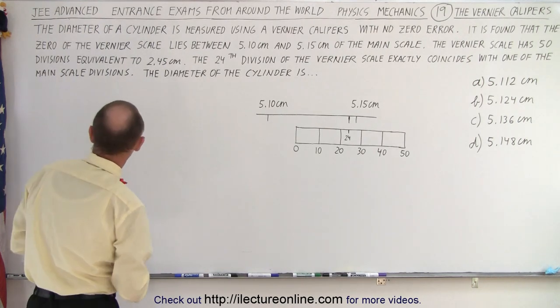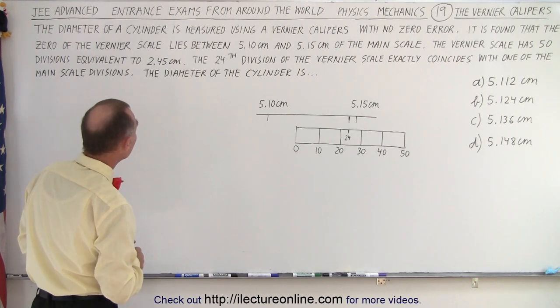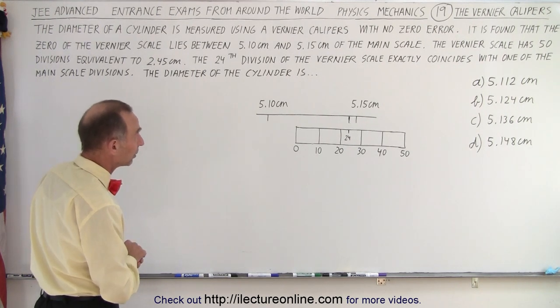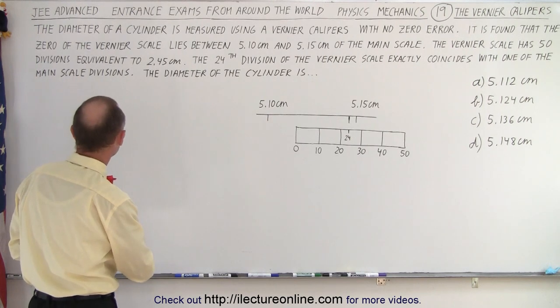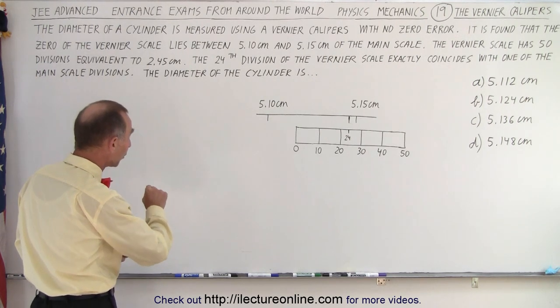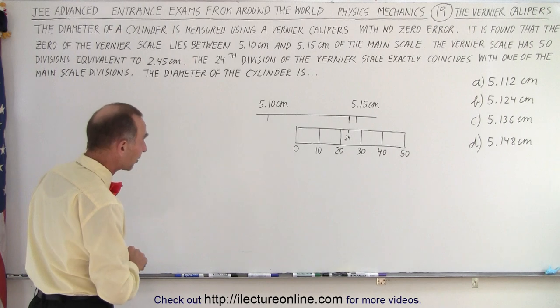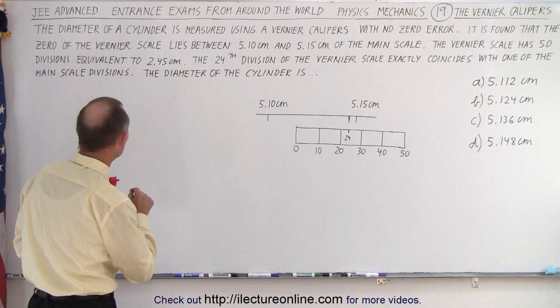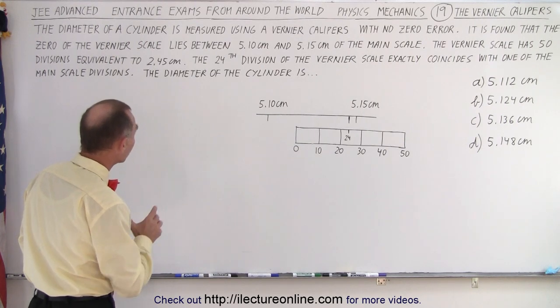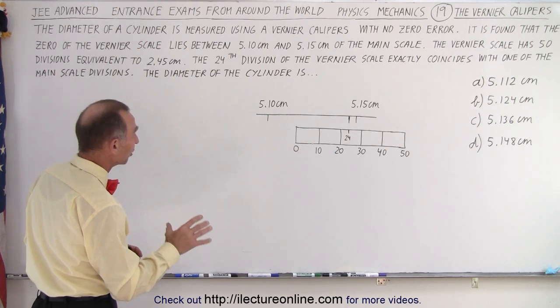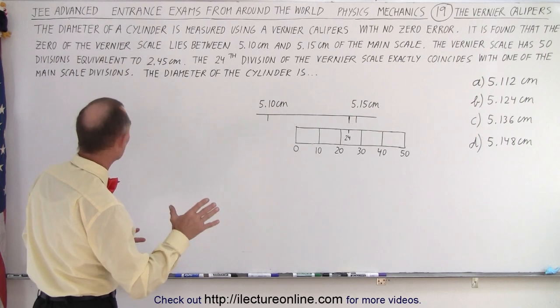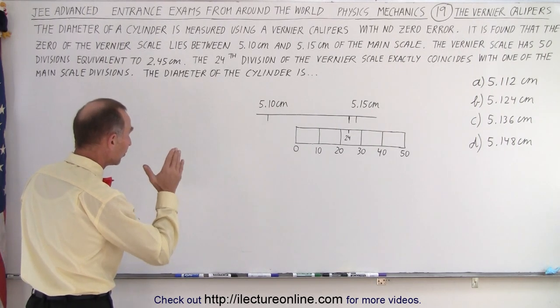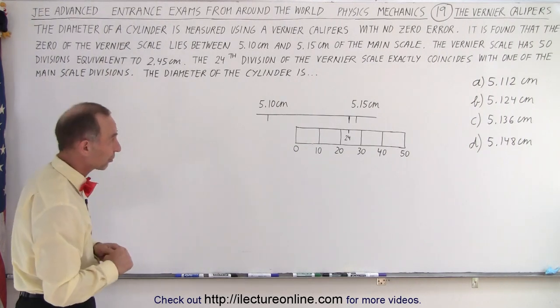Let's read the problem. The diameter of a cylinder is measured using a vernier calipers with no zero error. The zero of the vernier scale lies between 5.1 and 5.15 centimeters of the main scale. The vernier scale has 50 divisions equivalent to 2.45 centimeters. The 24th division of the vernier scale exactly coincides with one of the main scale divisions. The diameter of the cylinder is, and we're given four possible answers.